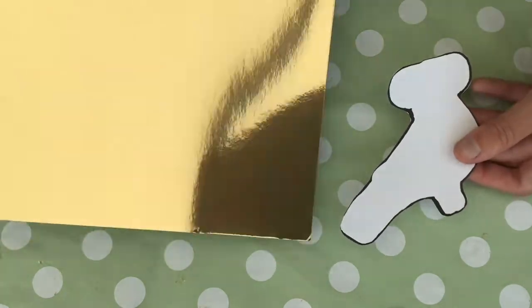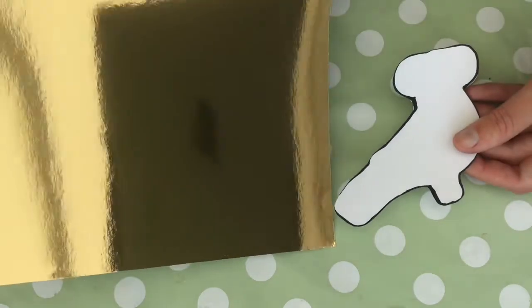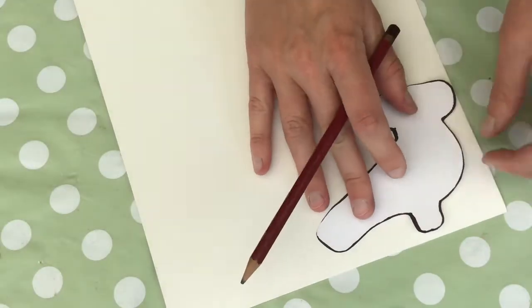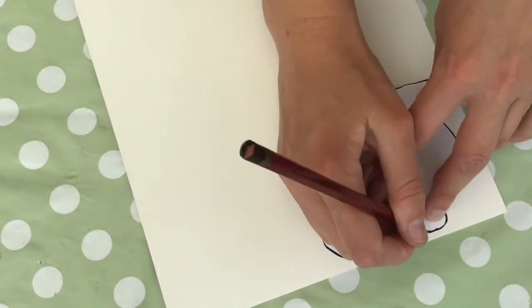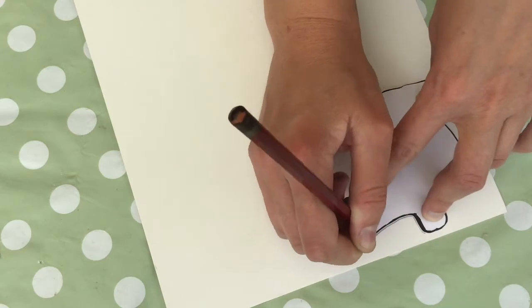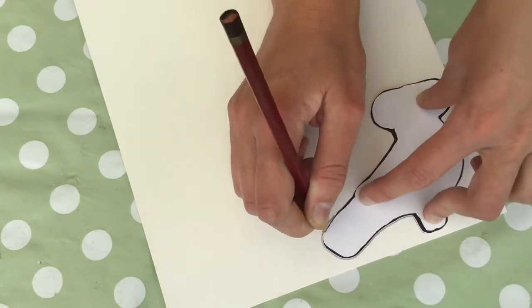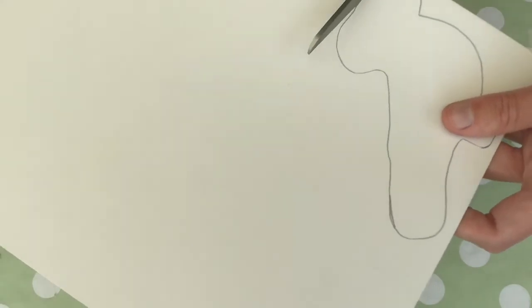So here's my template and here is the gold shiny card. So I'm going to put this on the back and draw around it like so. And now, you guessed it, I'm going to cut it out.